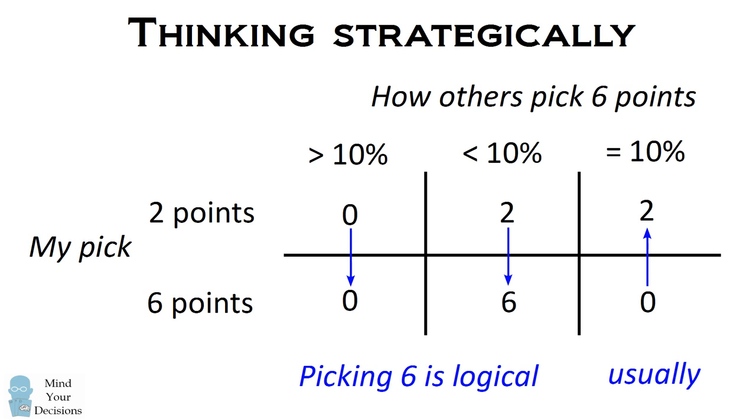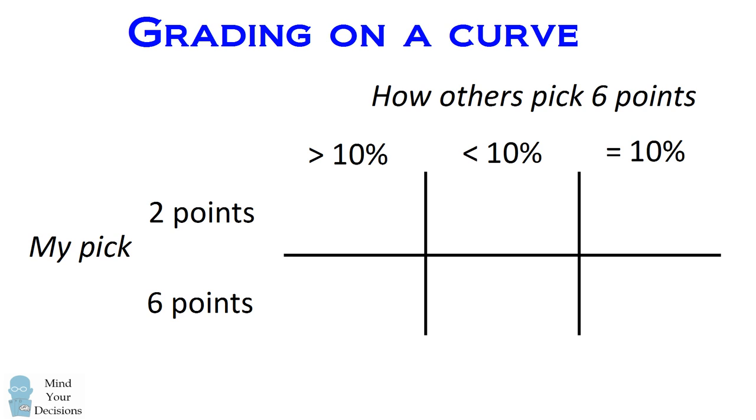But there is another reason to think about why picking 6 is logical. Exams are not usually based on the absolute number of points you get. It is not usually a point threshold that 90% is an A, 80% is a B. That is usually true in grade school or high school. But once you get to college, everything is usually graded on a curve. Your grade is based on how much better you do relative to everyone else. So you don't want to think about the absolute number of points you are getting.